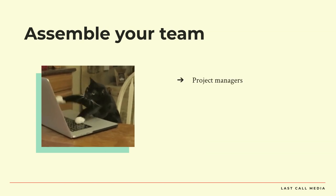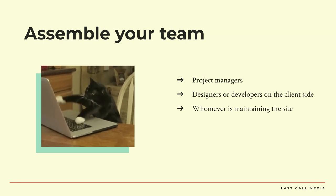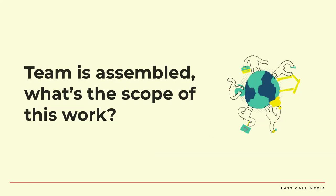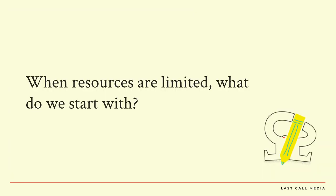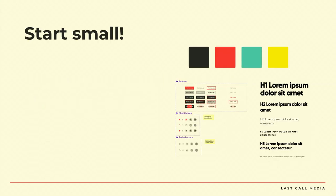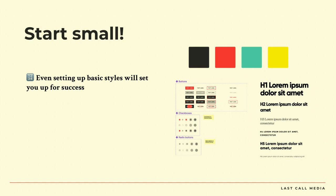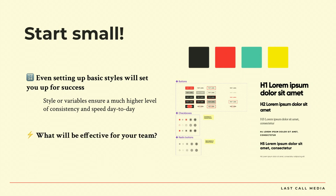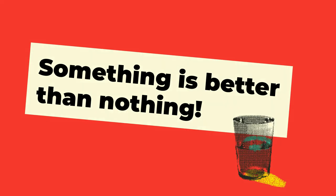You might want to talk to a project manager — they might be able to help you set up that Jira project, the backlog, the tickets, if that's how you want to manage the work. Talk to designers and developers on the client side to make sure everybody's aligned. Whoever's maintaining the site might want to know about what's going on. There might be other vendors who are open to collaborating. So your team is assembled — what is the actual scope of the work? We already talked about pairing it down to what's doable and what's actually going to be efficient. When resources are limited, we start small. Even setting up basic styles or variables is going to set you up for success.